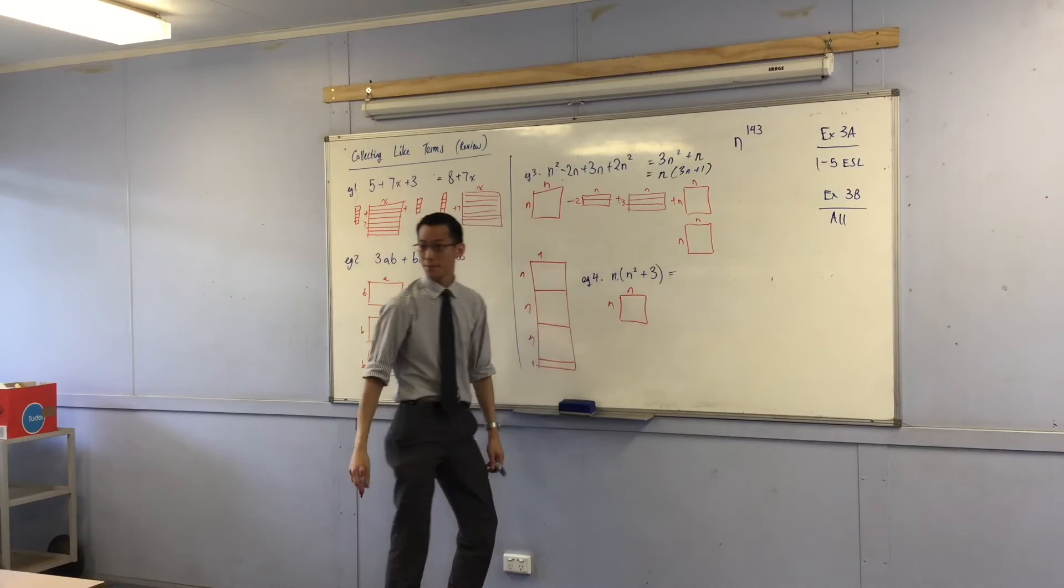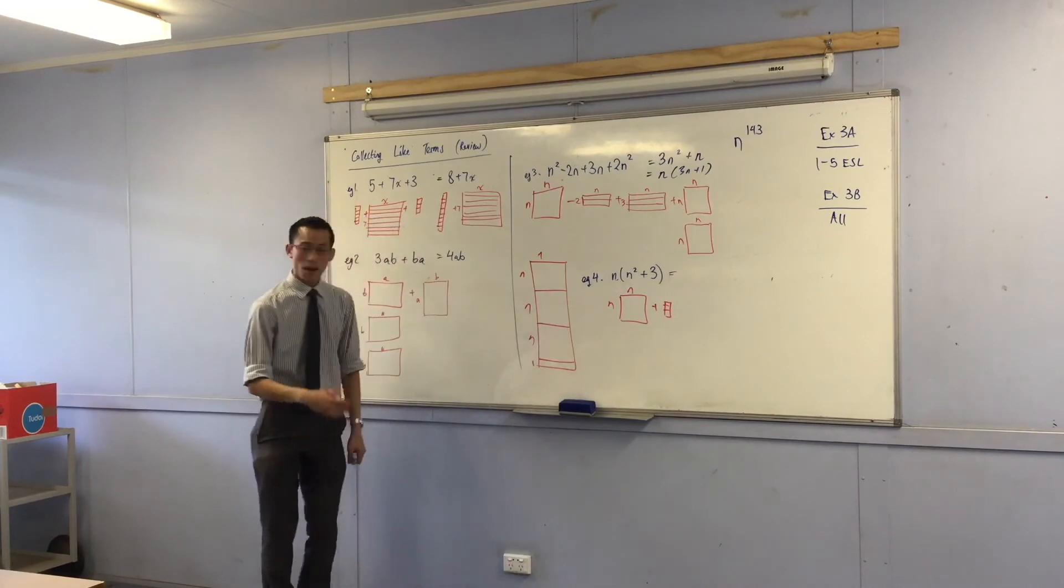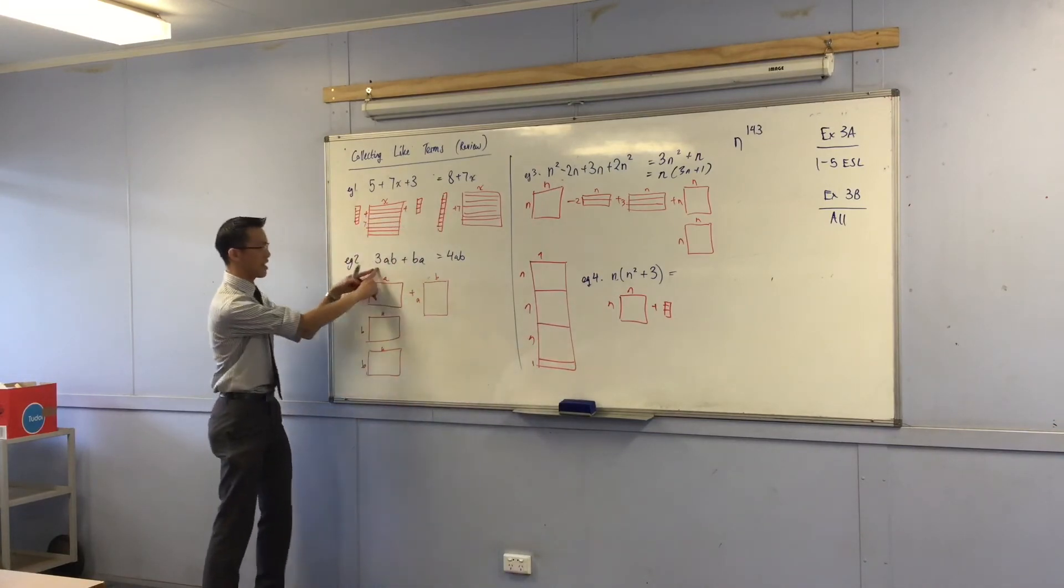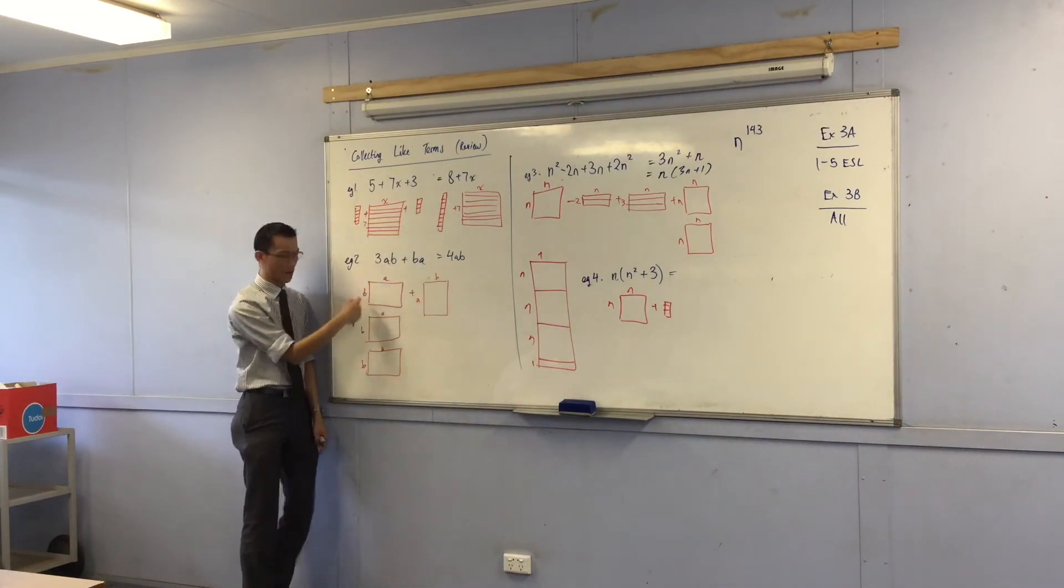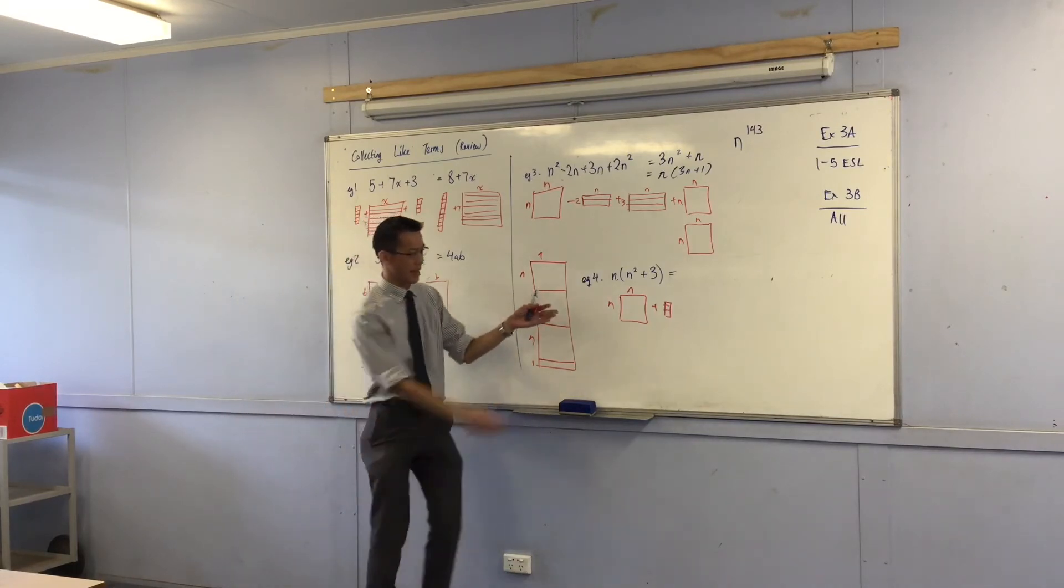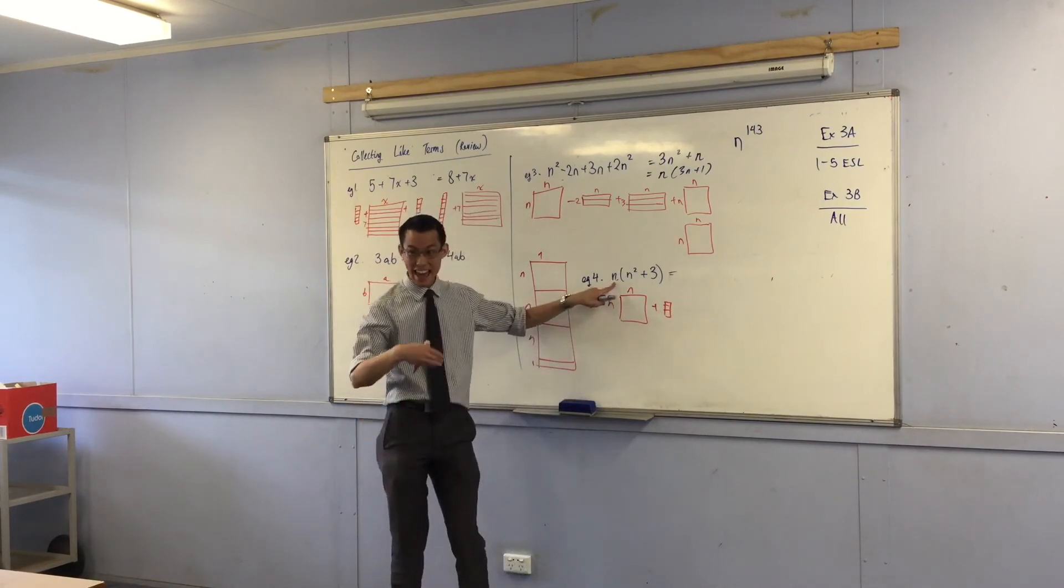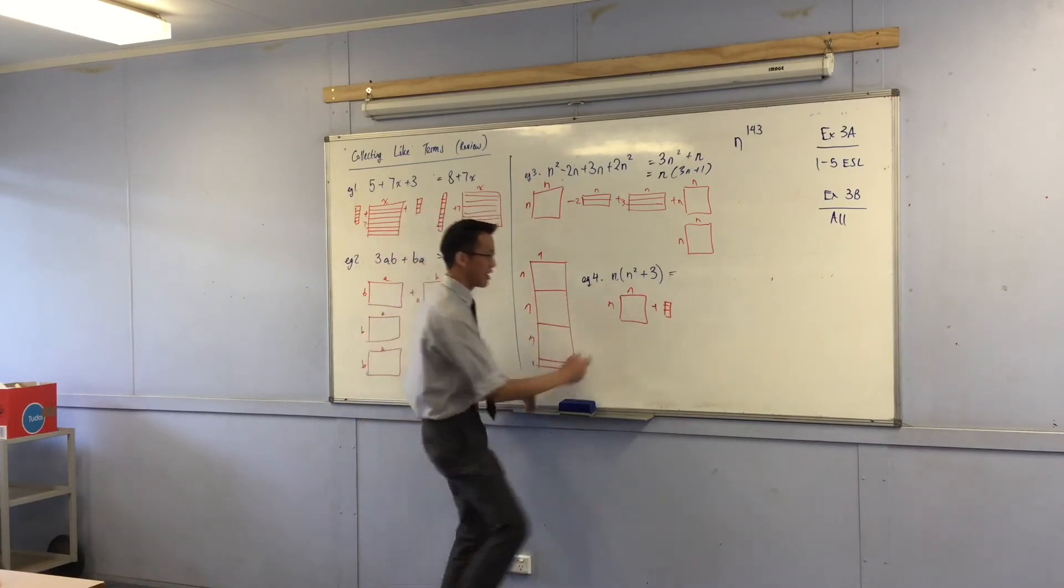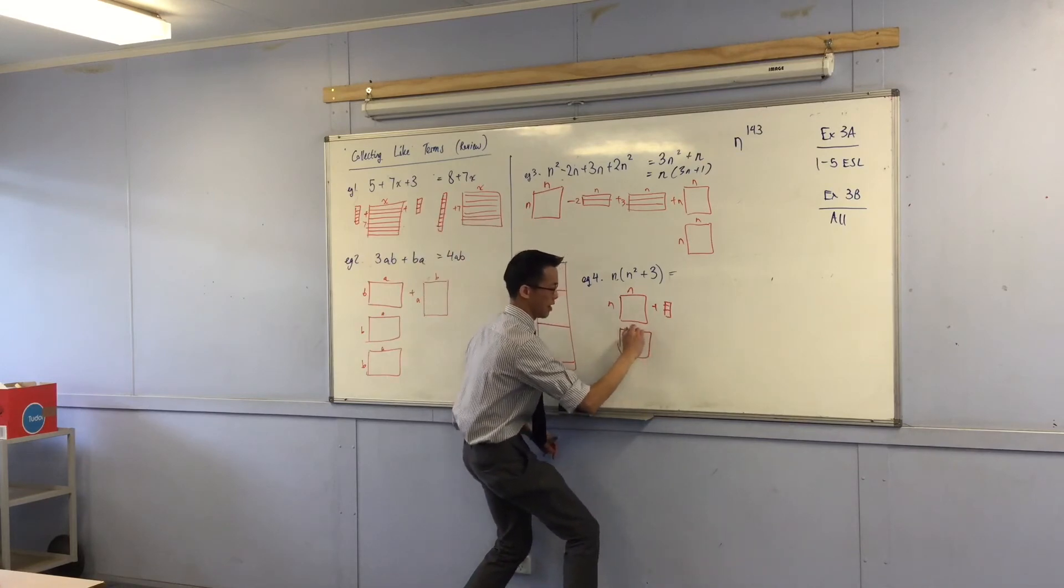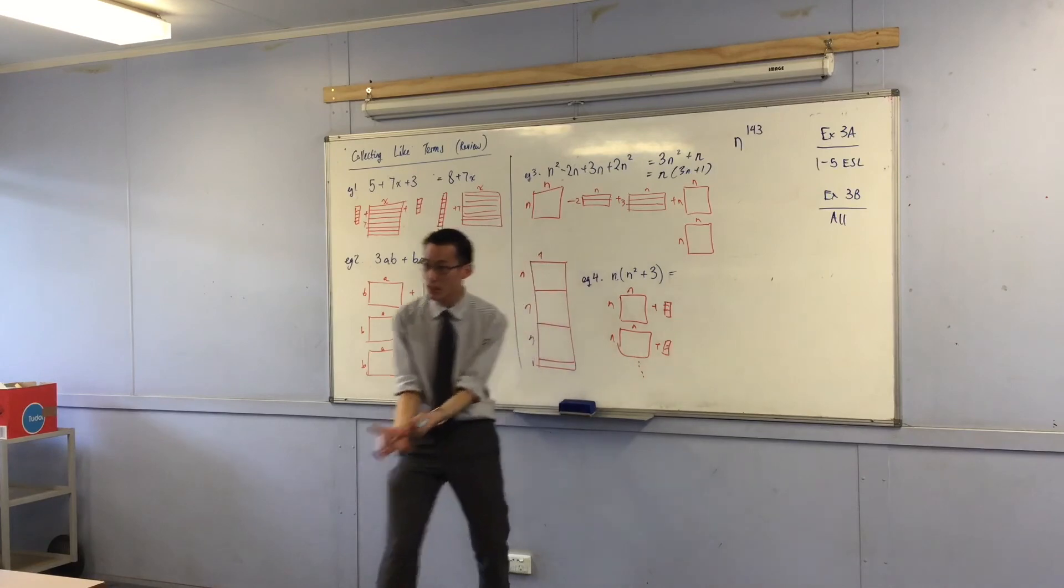And then three. There you go, there's three. But just like over here, how it's like oh there's a rectangle but now I want three of them, three of those rectangles. How many rectangles like this am I going to have? And the answer is I'm going to have n of them. Now watch this.